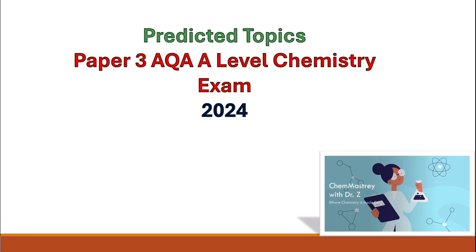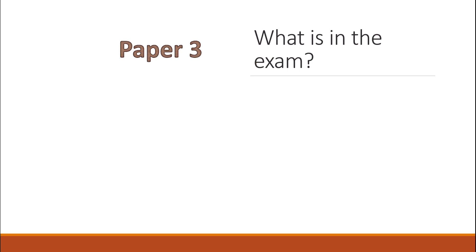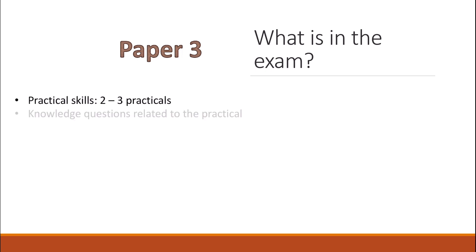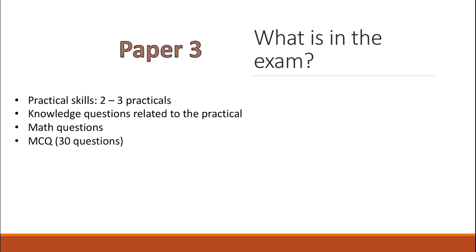Predicted topics for Paper 3, AQA A-level Chemistry exam 2024. In general for Paper 3, there will be practical skills with two to three practicals, knowledge questions related to your practicals, several math questions, and 30 multiple choice questions. What comes in the exam will depend mainly on what came in Paper 1 and Paper 2. I have some idea about what didn't come in those papers, and I know what came last year, so I'm going to give you my own prediction for this year.